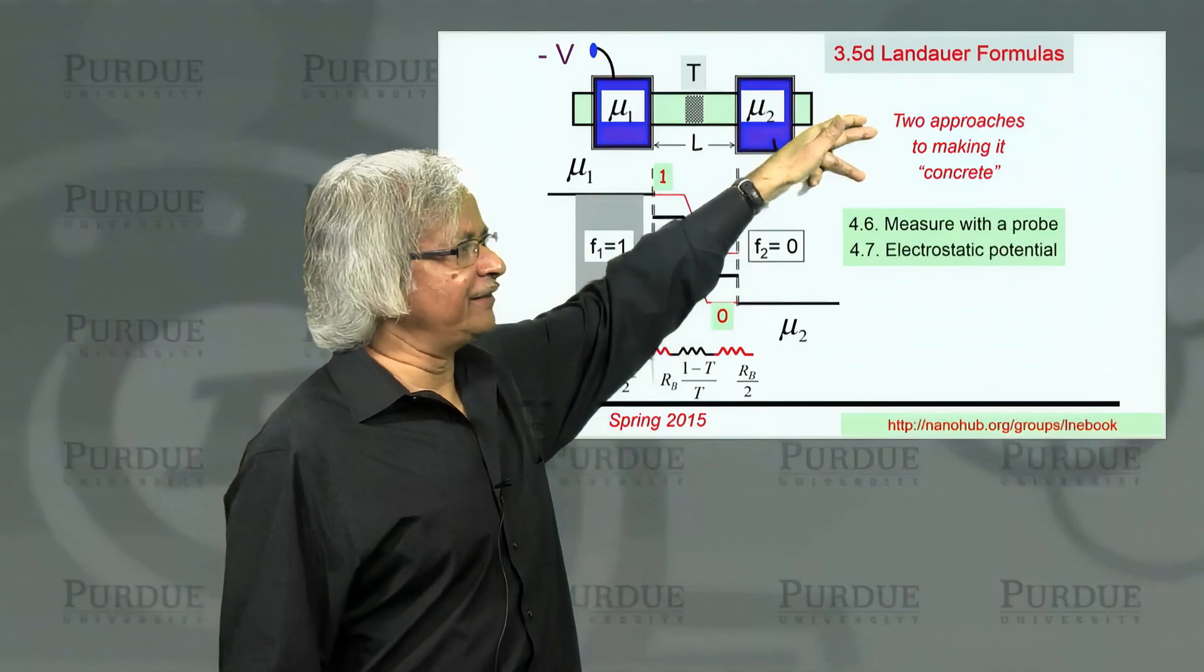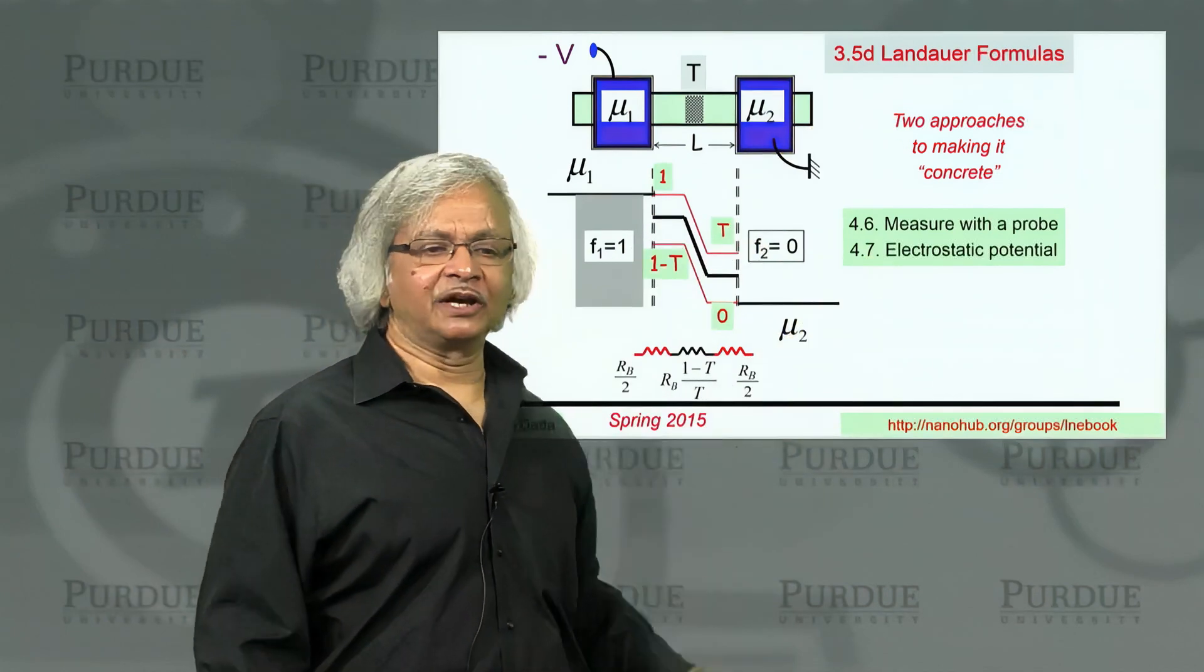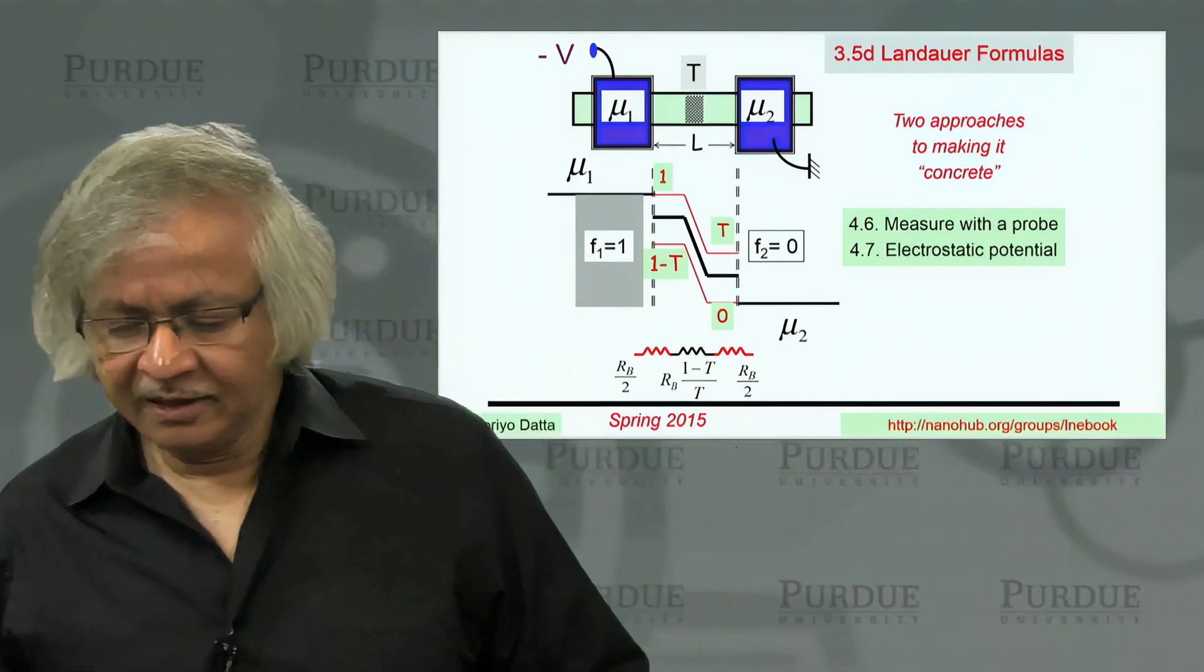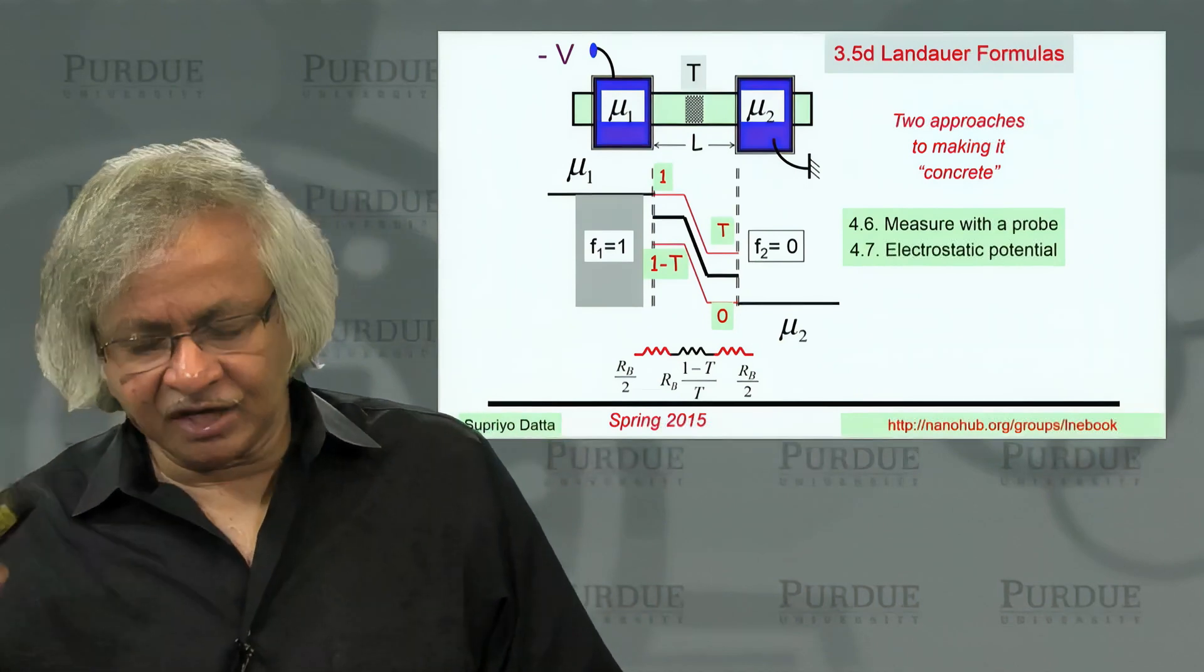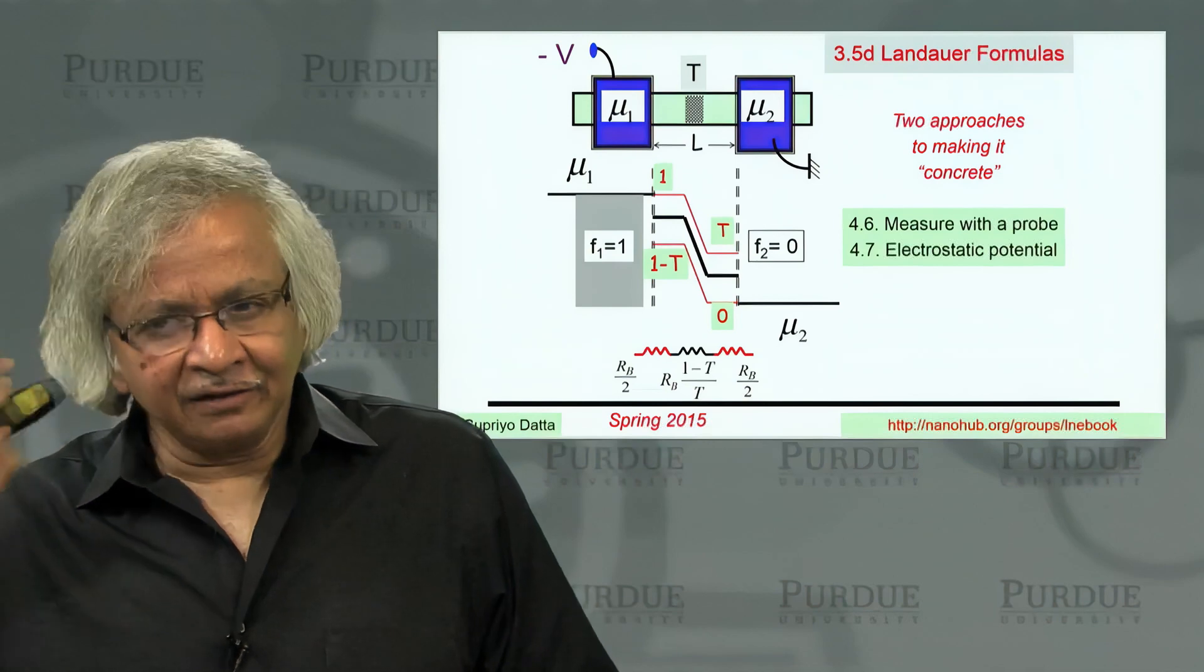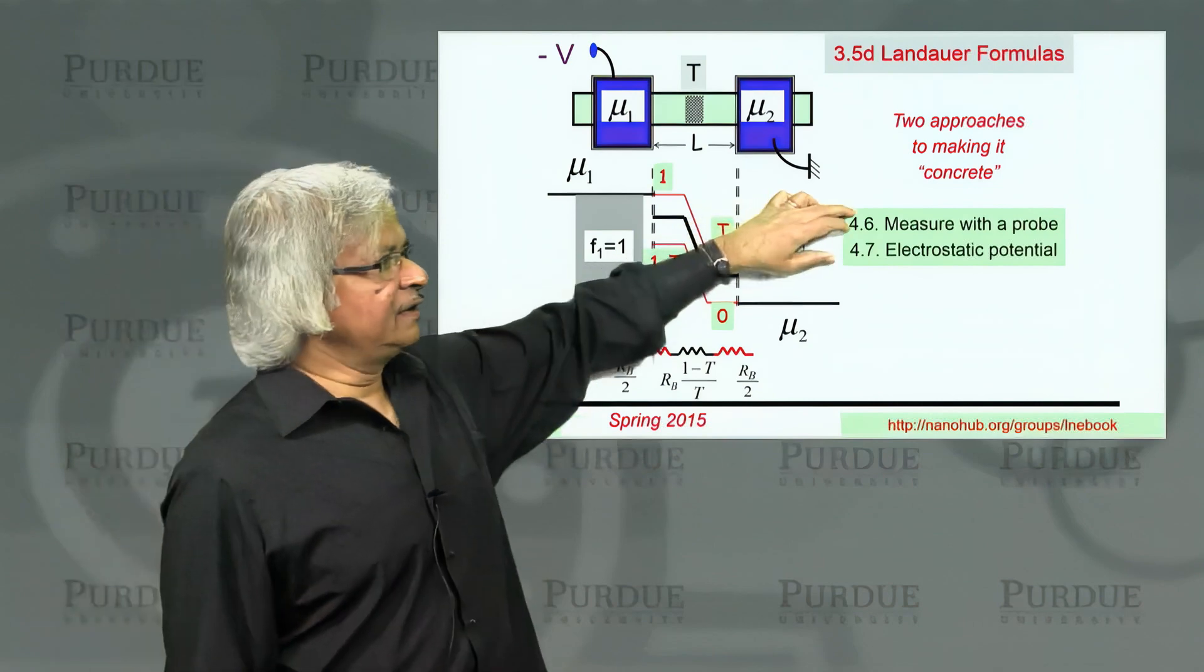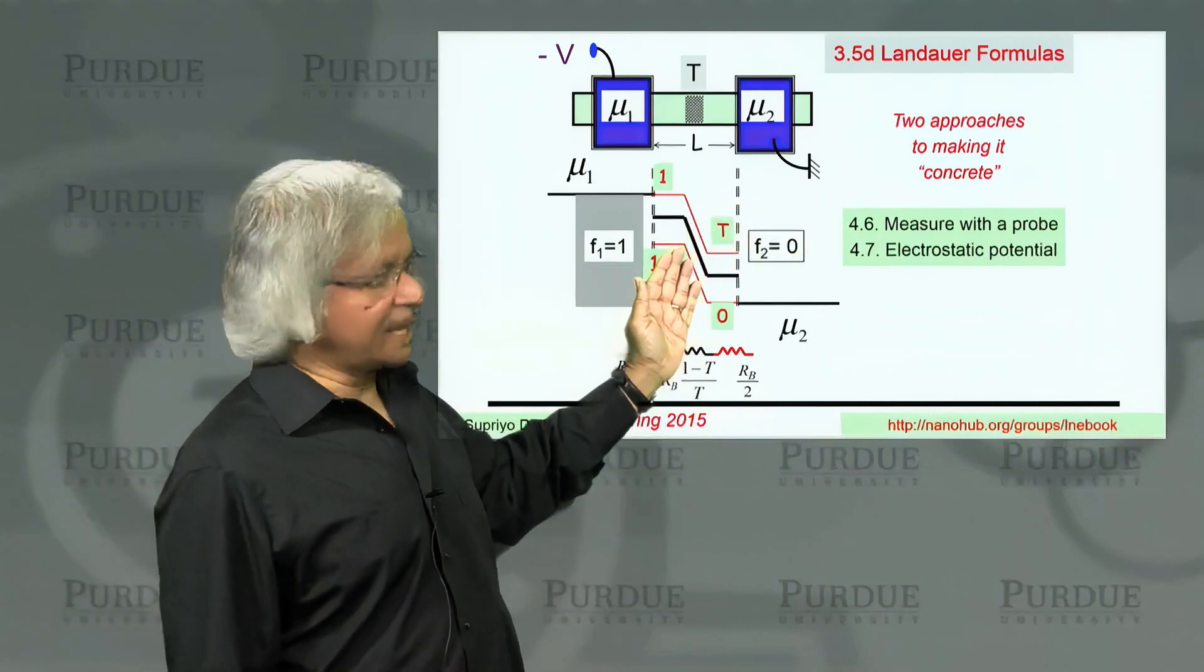People say, let's do something more concrete. One way is they say, let's just look at the electrostatic potential. Let's not even talk about quasi-Fermi levels. I've mentioned before, I don't quite like that because electrostatic potentials tend to smear things out and tend to obscure the physics. The other approach people use is, let's not talk about the potential inside, but let's just ask, what is the potential that a probe would measure?